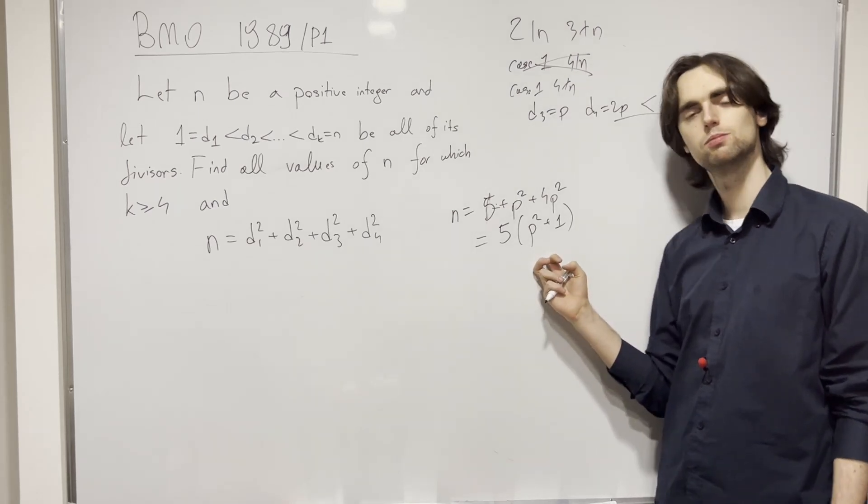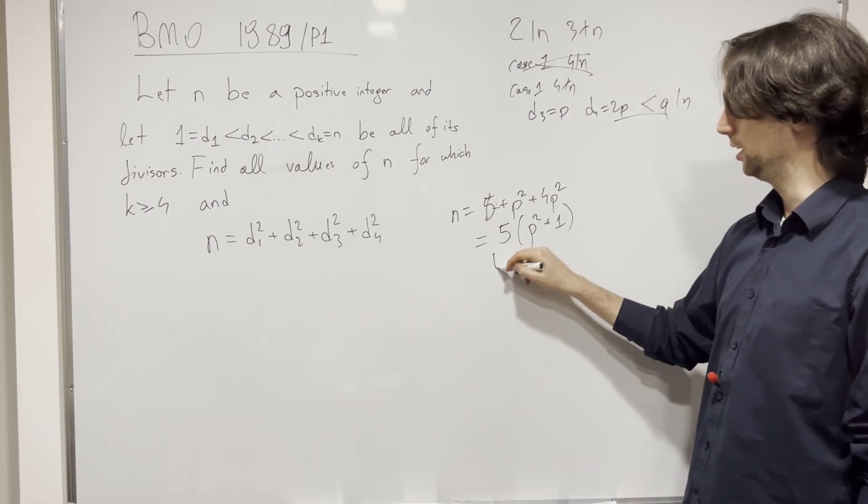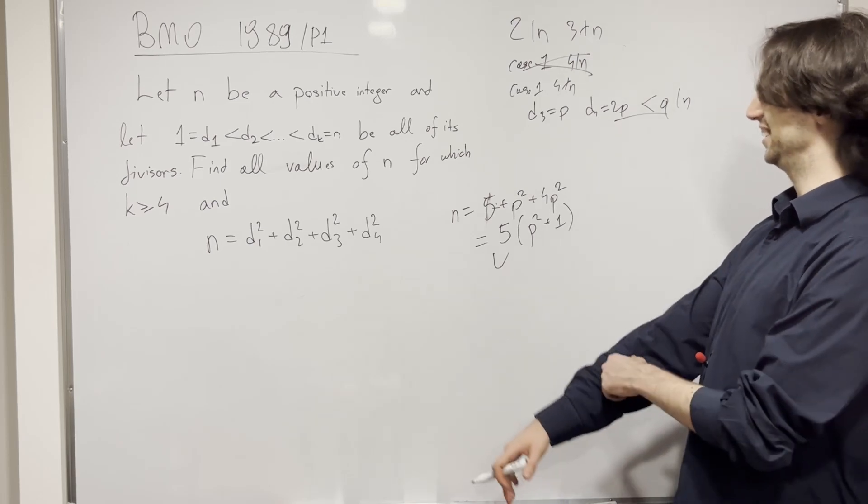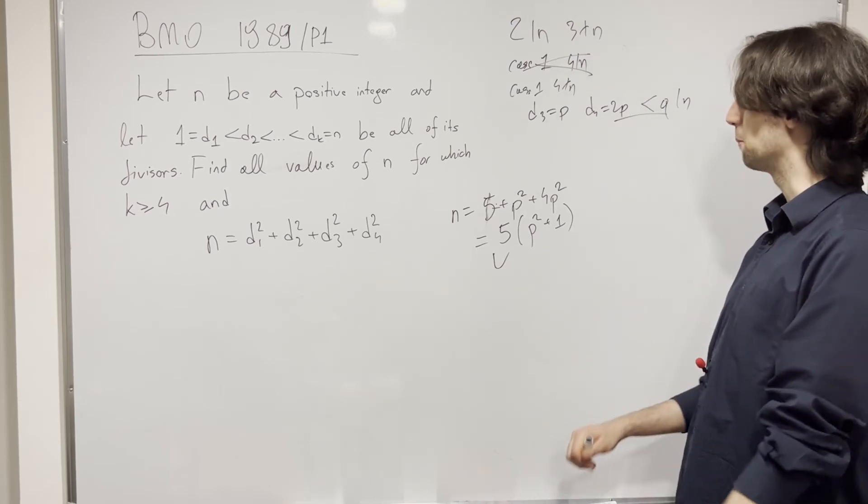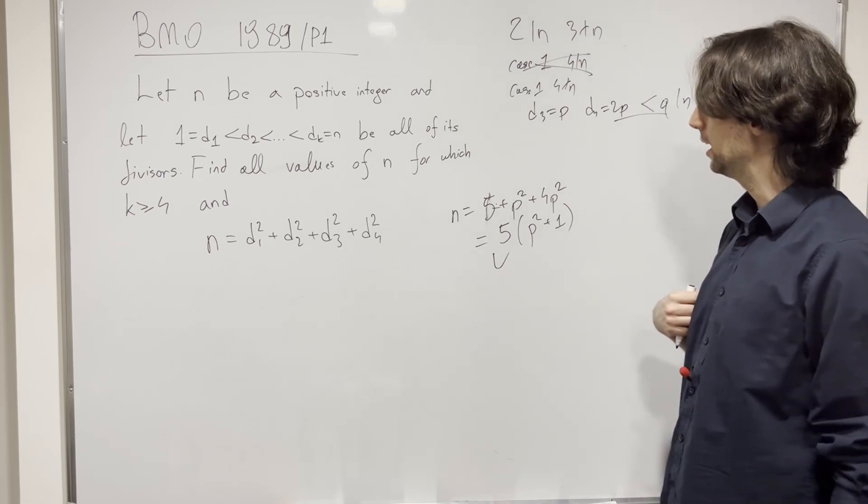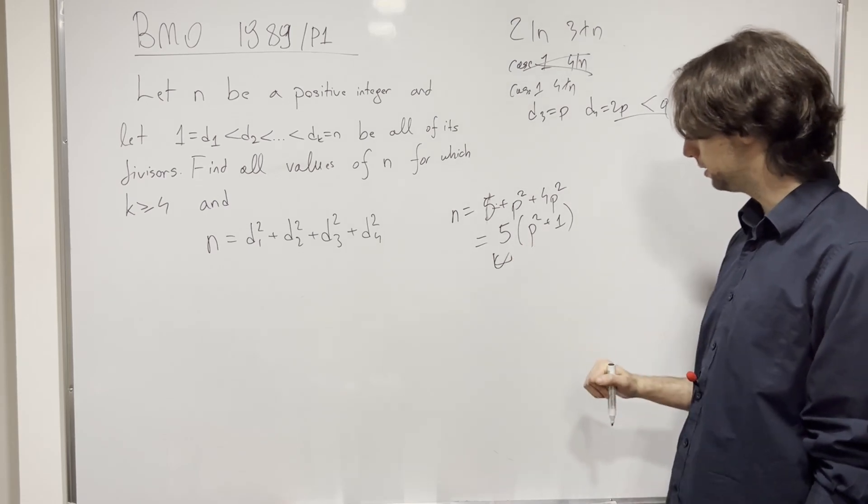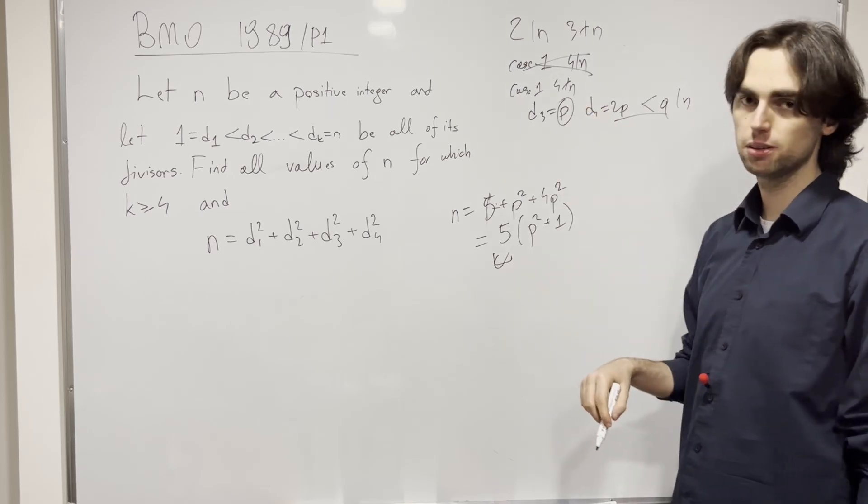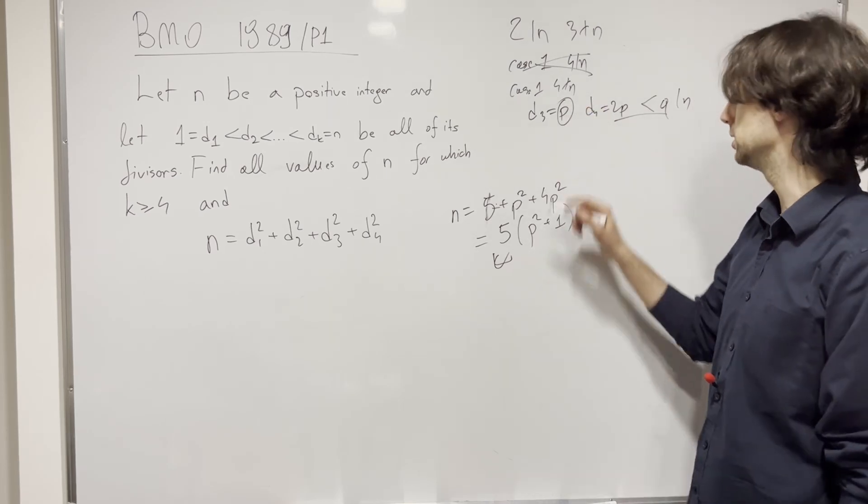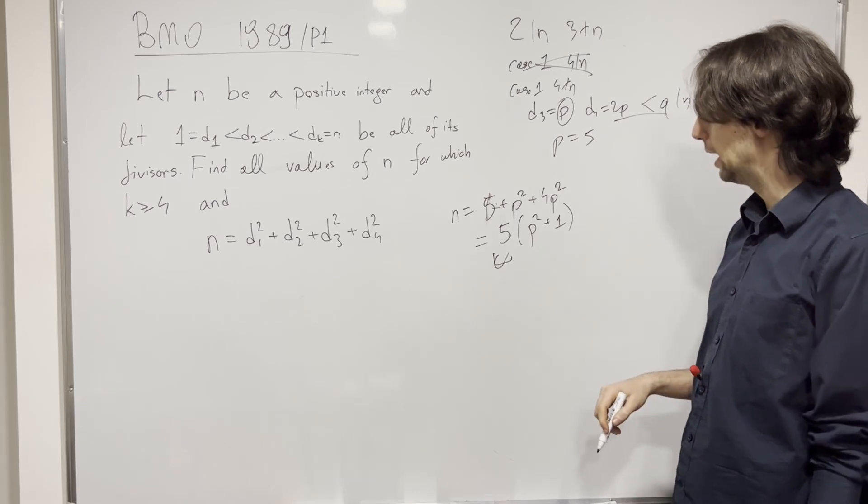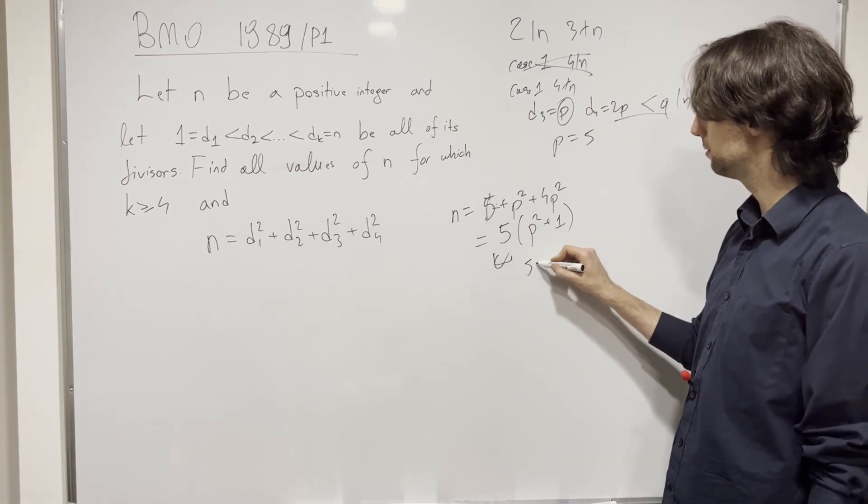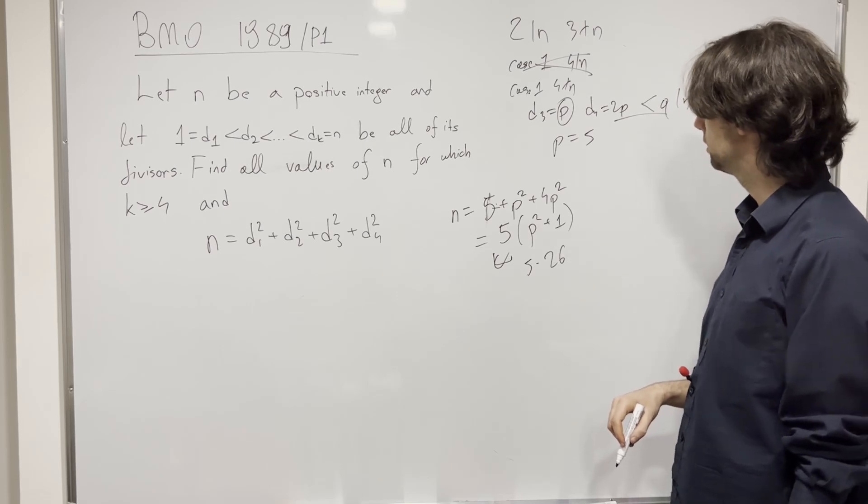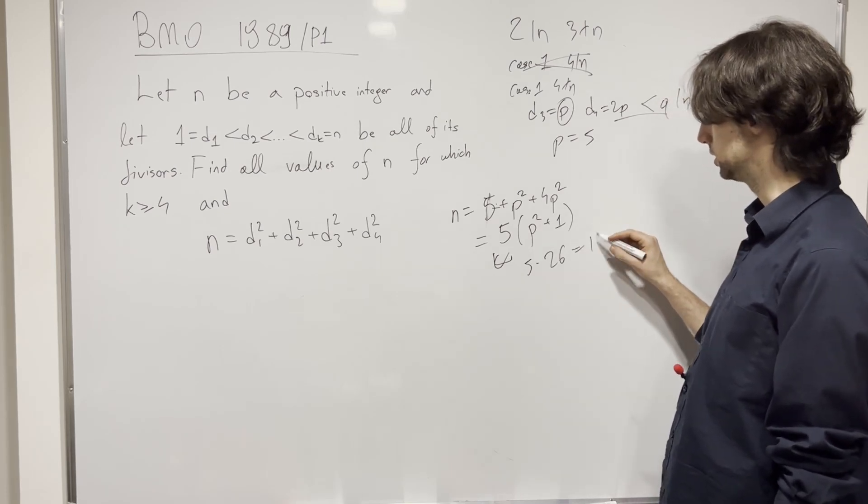Okay, so what does this tell us? Well, n is divisible by 5. Huh, this is cool. I actually, I dig this. This is pretty, pretty cool. For me, at least, this is pretty cool. And now what do we have with that? So, 5 divides n, which means this prime number, we showed it cannot be 3, so p is equal to 5, and then we have n is 5 times 25 plus 1, 5 times 26.